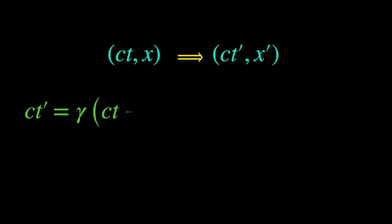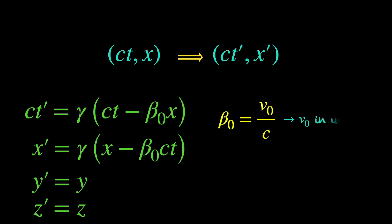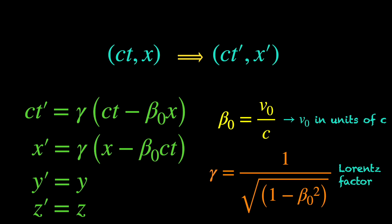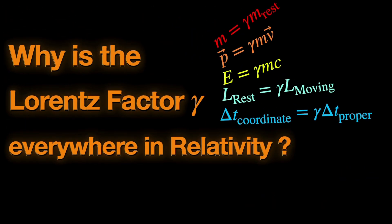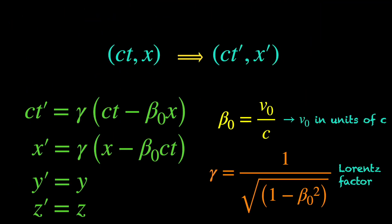Let's consider the Lorentz transformation equations connecting the space-time coordinates of two inertial frames, the primed and unprimed ones. β₀ is the relative velocity between the two inertial frames along their common x-direction in units of light speed, i.e., V₀ upon C. And gamma, given by 1 upon square root of 1 minus β₀ squared, is the Lorentz factor which acts as a scaling between the coordinates of the two frames. Since the relative velocity between the two frames is in the x-direction, nothing much happens to the y and z coordinates, so we can safely ignore them and focus totally on the x-t sector.